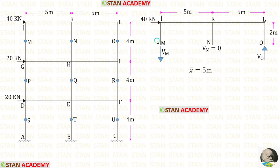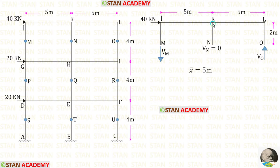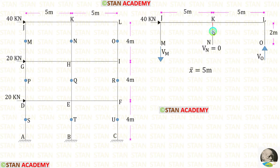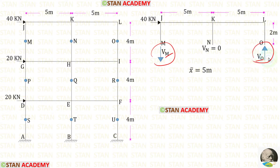Let us keep the axial force in point M as VM, in point N as VN, and in point O as VO. We know that the center of gravity passes through member KN. On the left side of the center of gravity, the member will be tensile, and on the right side the member will be compressive. That means on the left side the axial force will be acting downwards, and on the right side it will be acting upwards. Since the center of gravity passes through member KN, the axial force VN will be zero. So there are only two axial forces, and VM and VO will have the same value — only the difference is that VM is acting downwards and VO is acting upwards.